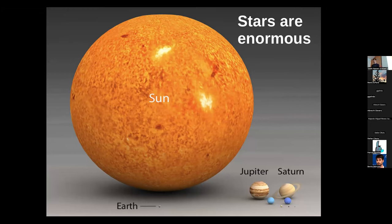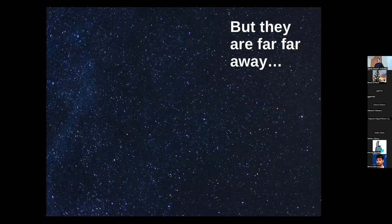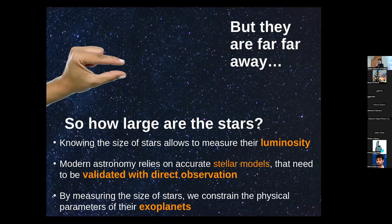Stars are enormous but they are very far away, so the relative distance between stars is enormous. Therefore, the actual angular size of individual stars is really, really small. Knowing how small these stars are is very important for astronomy — having a direct measurement of the actual size of stars allows a direct measurement of luminosity, and this is used in many fields of astronomy, especially for ensuring that stellar models are correct.